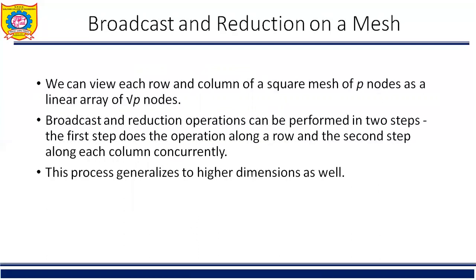Consider the problem of one to all broadcast on a two dimensional square mesh with root p rows and root p columns. First, one to all broadcast is performed from the source to the remaining root p minus one nodes of the same row. Once all nodes in the row have acquired the data, they initiate a one to all broadcast in their respective columns. At the end of the second phase, every node in the mesh has a copy of the initial message. The communication steps for one to all broadcast are illustrated in the figure of one to all broadcast on a 16 node mesh.